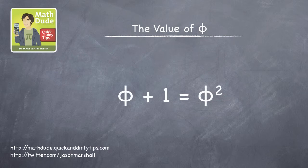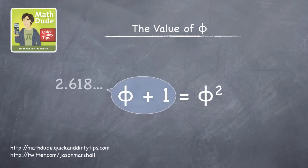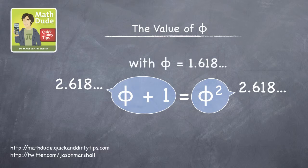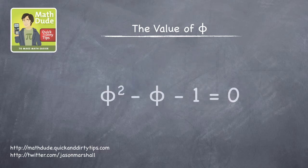It satisfies phi plus 1 equals phi squared. That is, adding 1 to phi gives the same answer as squaring it: 2.618. This gives us a quadratic formula for phi, so let's solve it.